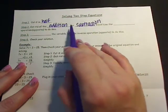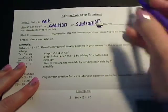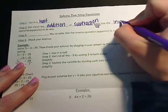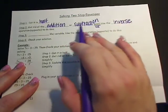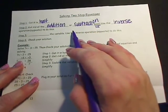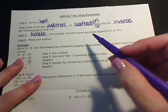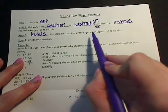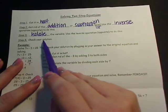So we're going to get rid of the addition or subtraction first. In order to get rid of the addition or subtraction, we're going to use the inverse operation. After we get rid of the addition or subtraction, then we can isolate the variable. And in order to isolate the variable, we're going to use the inverse operation again. Step four is to always check our solution.